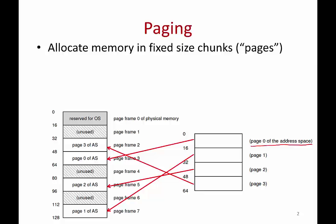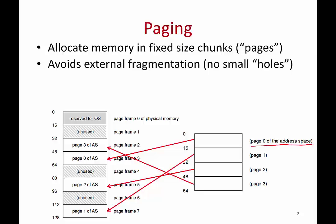The address space of a process is divided into pages. In real life you have much larger pages and a much larger number of pages. Each of these pages is mapped to a physical frame in memory. Your physical memory is also divided into chunks of the same size. You can see that page 0 is mapped to frame 3, page 1 is mapped to frame 7 in physical memory, and so on. Because everything is in fixed size chunks, you no longer have the problem of fragmentation. So you do not have this problem of fragmentation with paging.